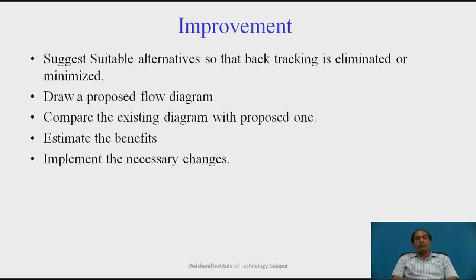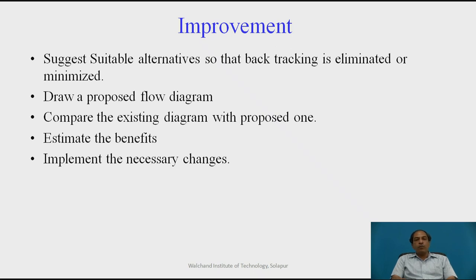After analysis, we have to go for the improvement phase, generally called improvement in method study. In method study, we try to find out what is the present method and what is the proposed method. Once analysis of the present method is done, we suggest suitable alternatives so that backtracking is eliminated or minimized. The best way is to eliminate backtracking and have a straight-line, simplified flow — this is called maximization of flow in lean manufacturing. If not possible, at least backtracking, waiting, and bottlenecking should be minimized.